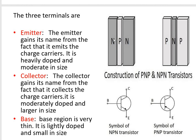The emitter is the heavily doped region and is of moderate size. The collector, as its name indicates, collects the charge carriers. Collectors are moderately doped and are large in size — the largest region in a transistor. The base region is very thin, slightly doped, and smaller in size.